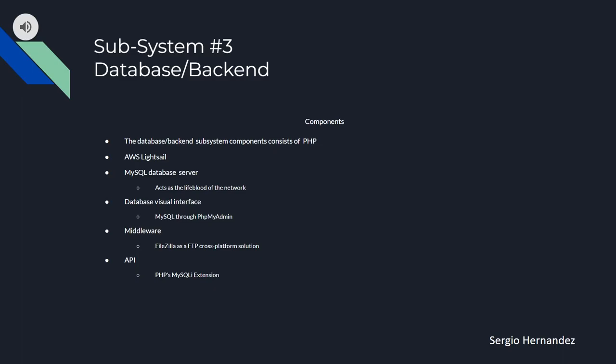The first aspect is the components. The database subsystem will consist primarily of PHP. We will be using an Amazon Web Services LightSail instance as well as a MySQL database server. This will act as sort of a lifeblood to the network. We're also going to be using a database visual interface in the form of phpMyAdmin, to administer the MySQL database servers through this visual interface.